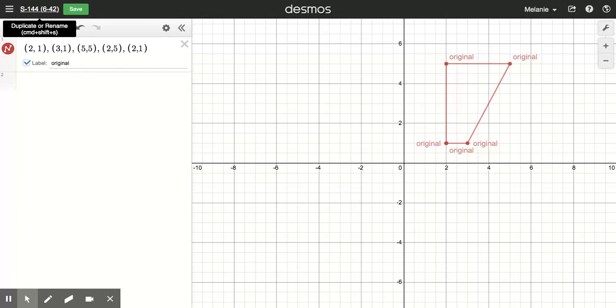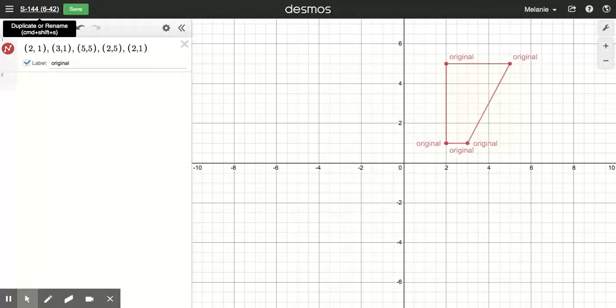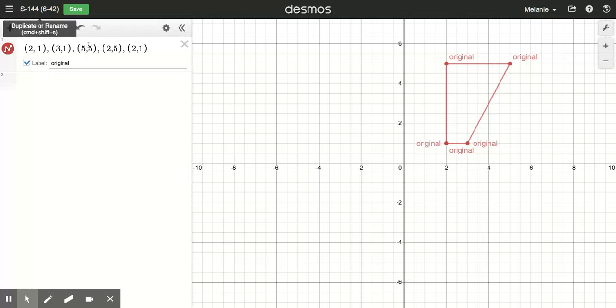Part B says without graphing, predict how you think the figure is gonna change if we multiply the x and y coordinates by 2. Well, I'm gonna skip the prediction and go straight to graphing it. So I want to graph the original points here but I want to multiply them by 2.